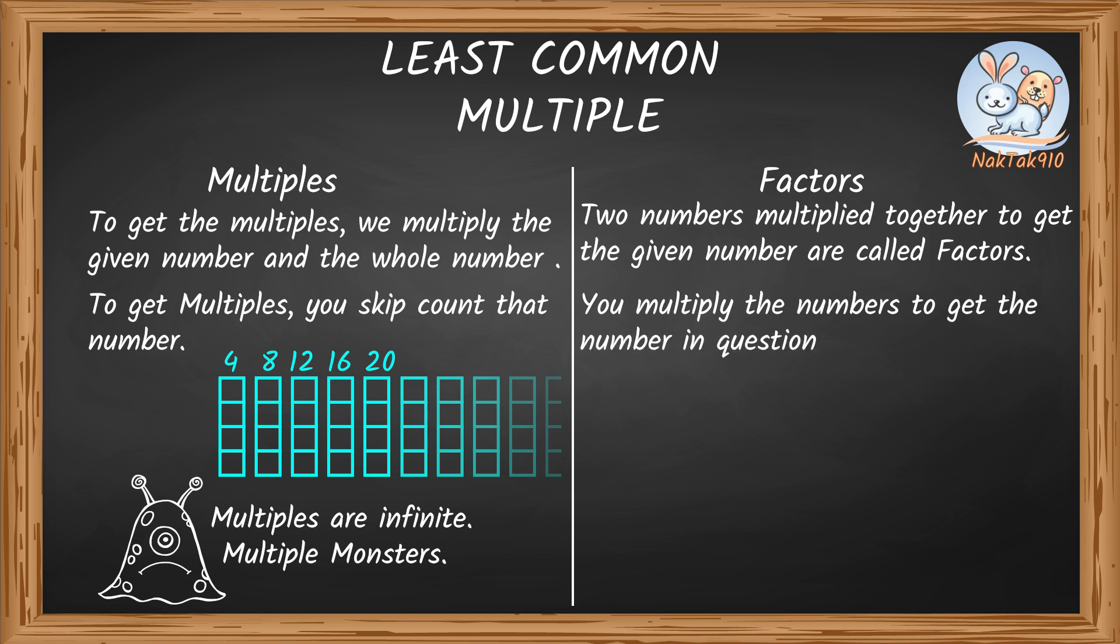For example, 25. 5 times 5 is 25. How many ways can 25 be written as factors? 5 times 5 is 25, 1 times 25 is 25. Factors are like cutting the number down, Dr. Ninja or Fruit Ninja. They're very limited.